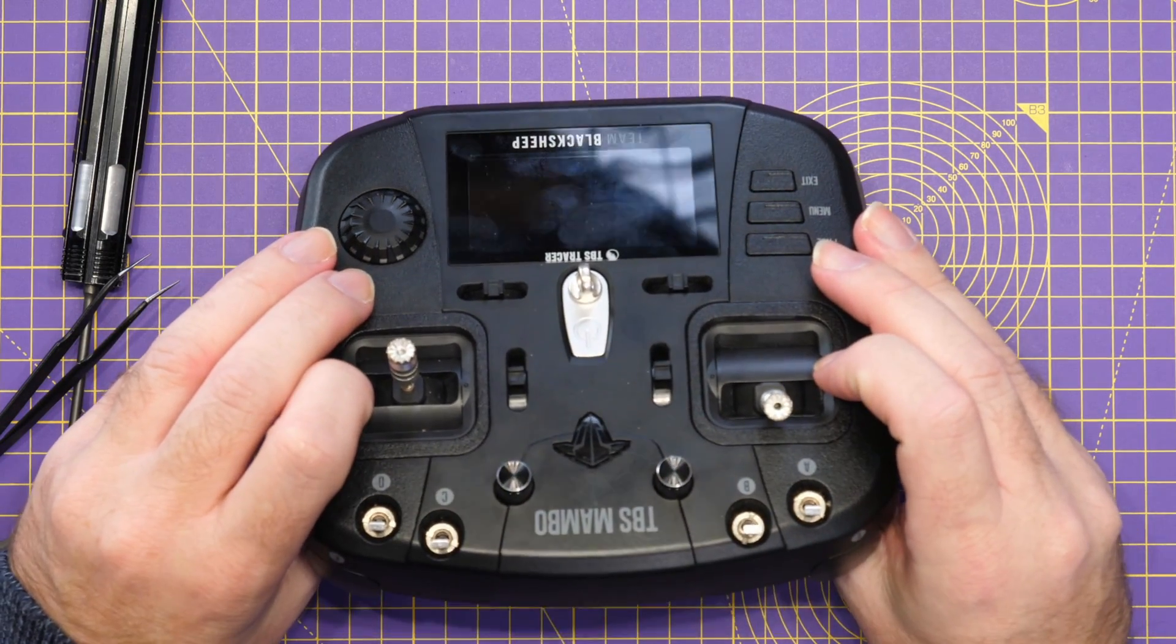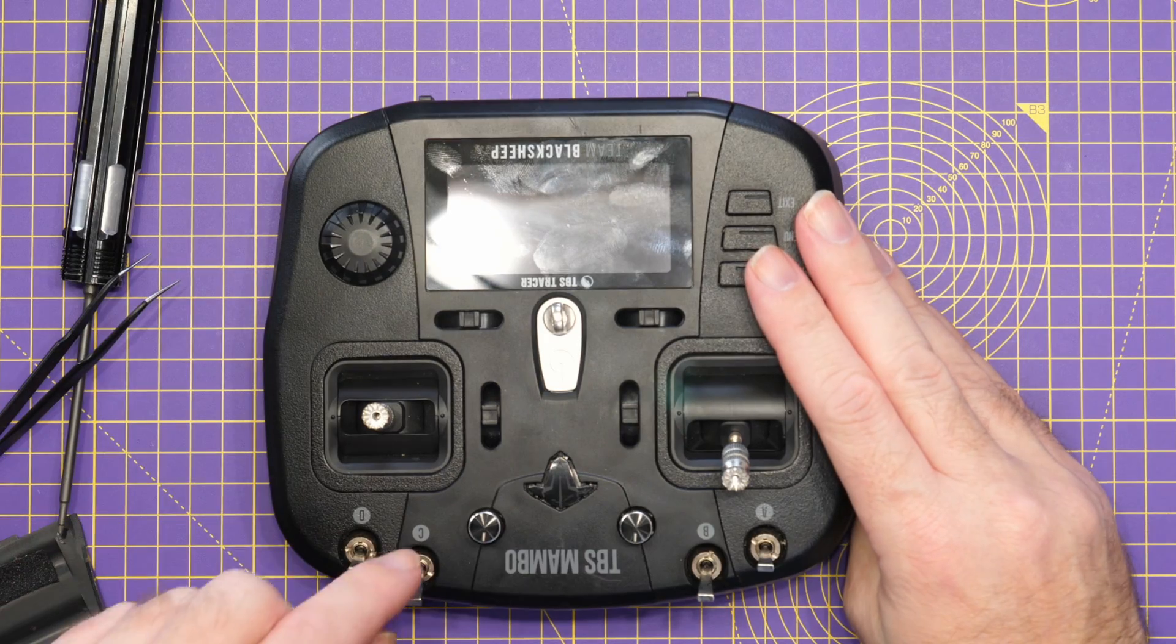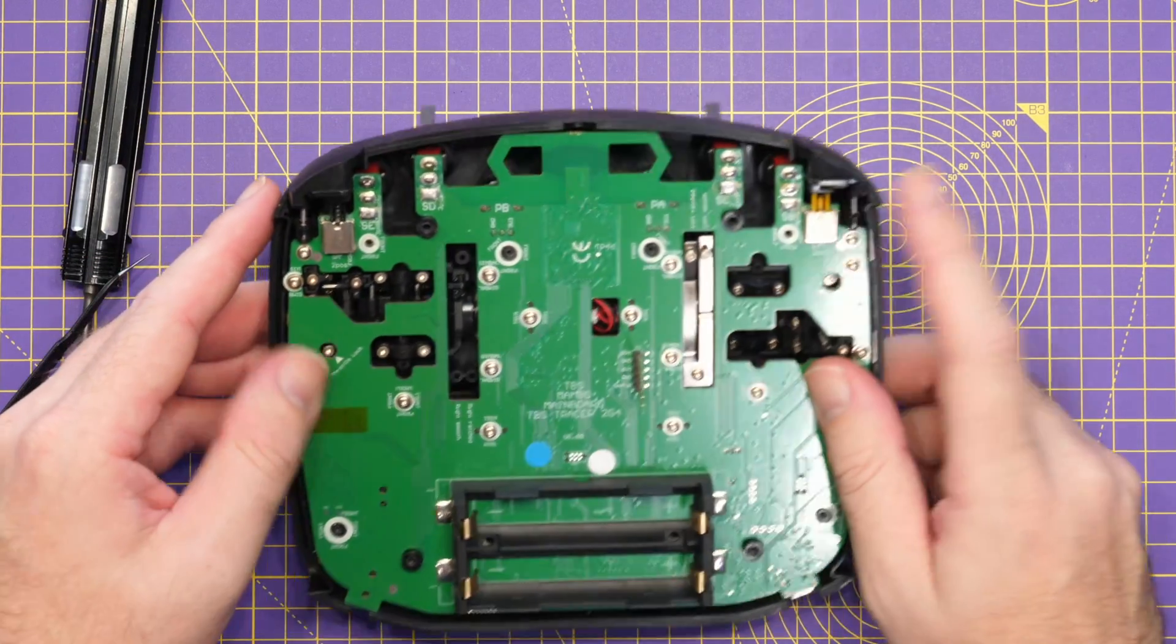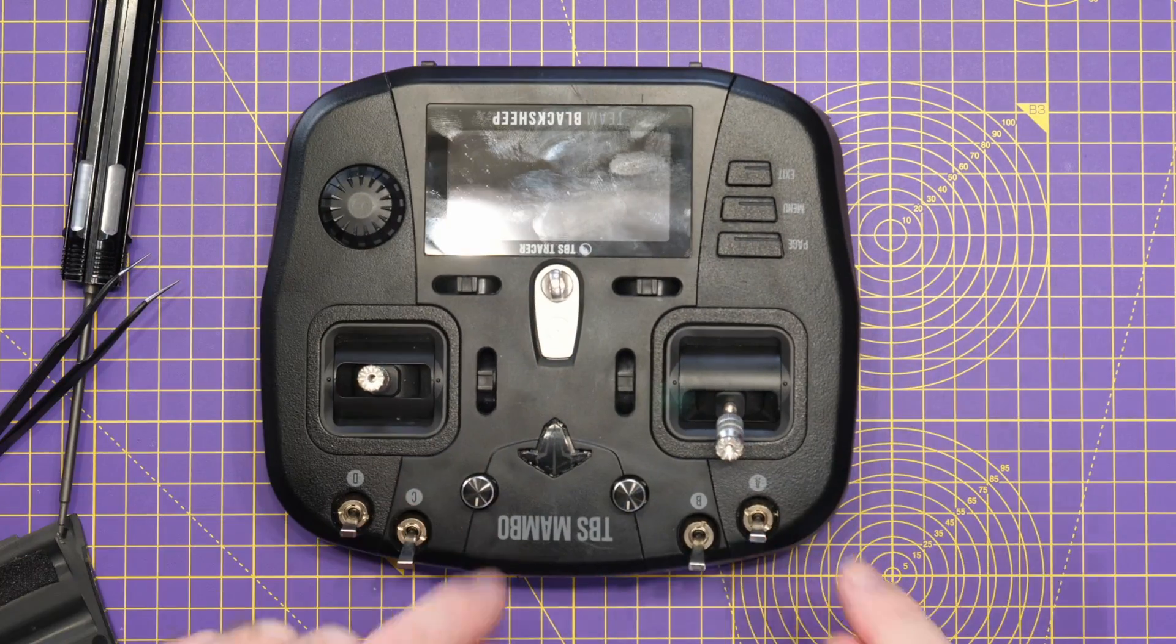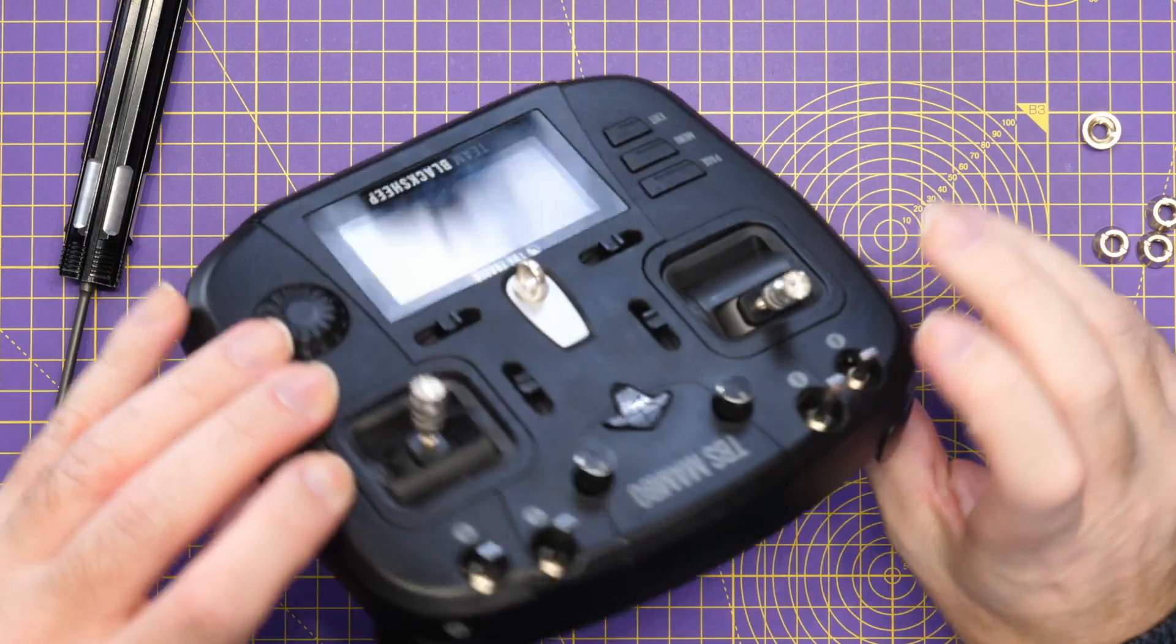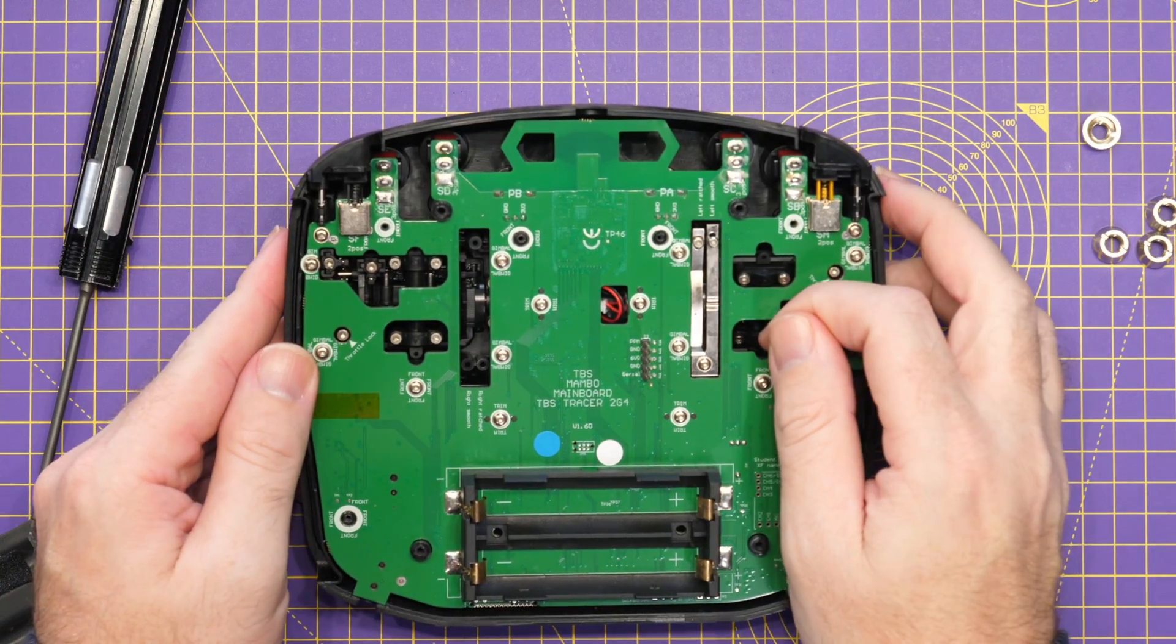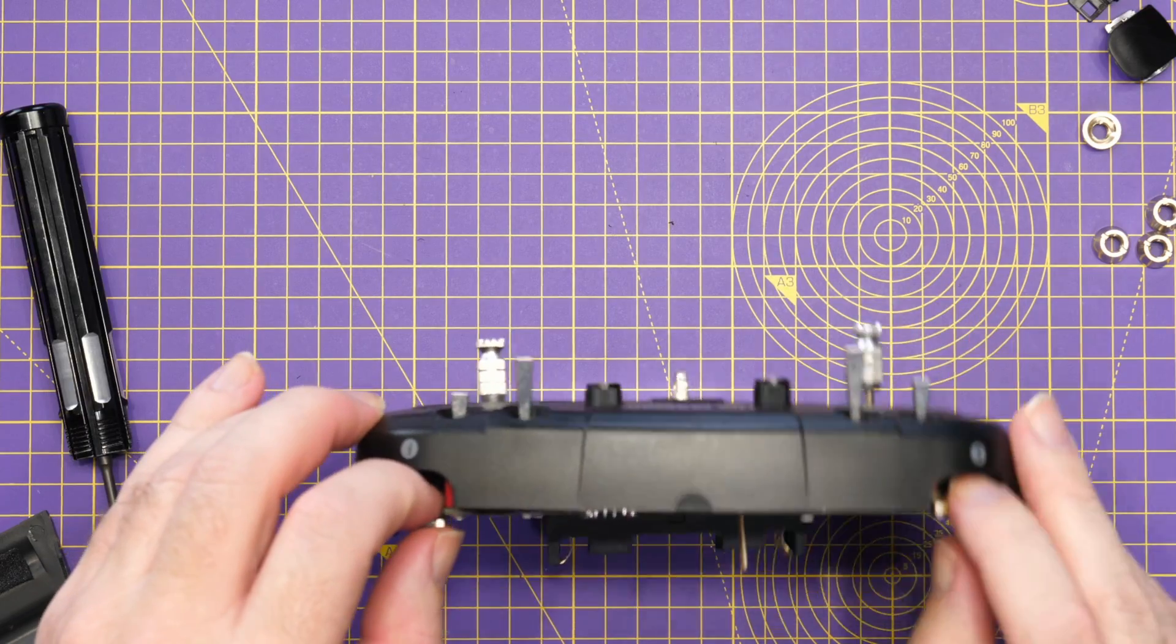We're then going to need to remove the nuts off these top switches because they're part of the main PCB. So we're going to need to remove the four of them. Okay so got the nuts off now. I keep meaning to get a tool for doing that actually. I really do need to order one.